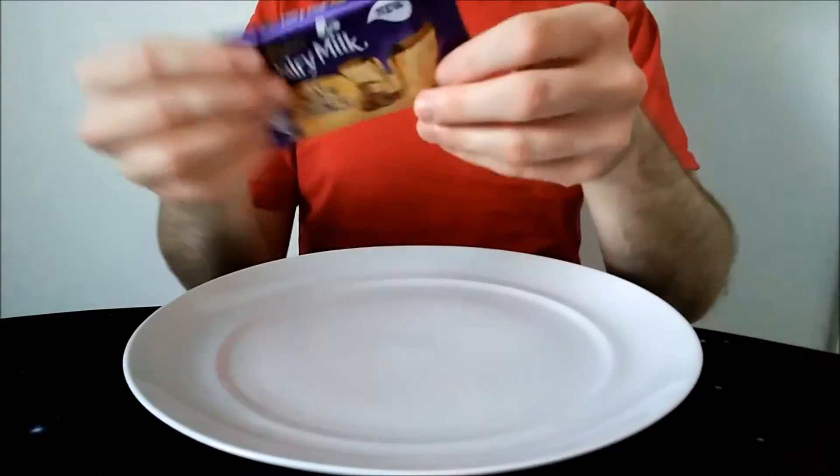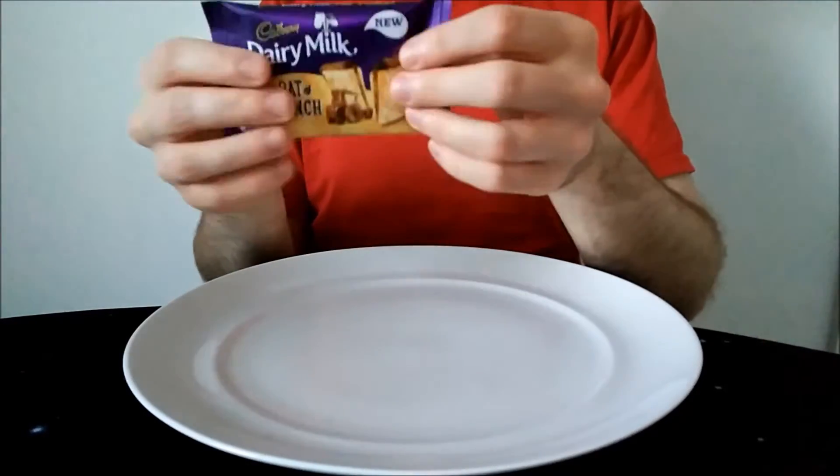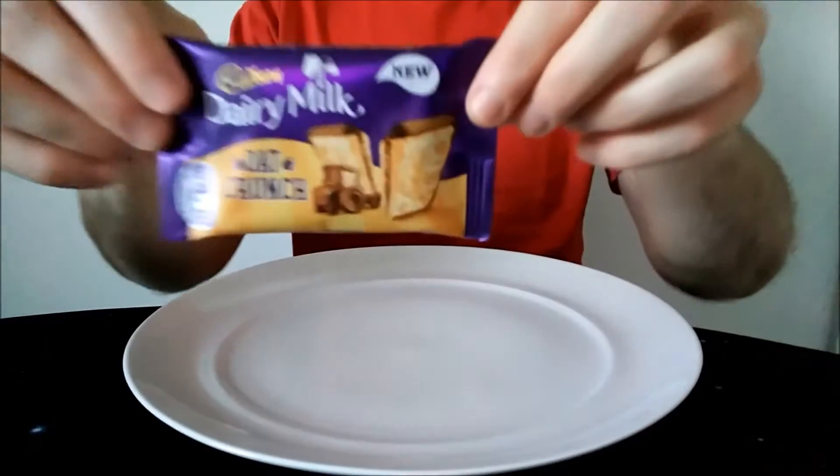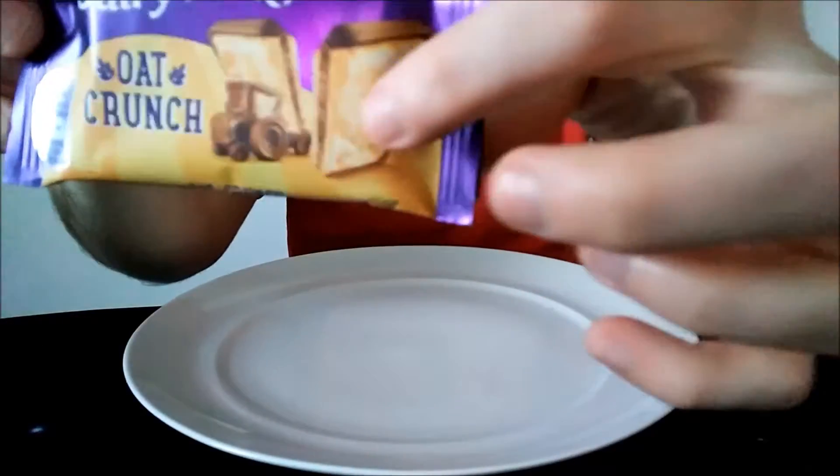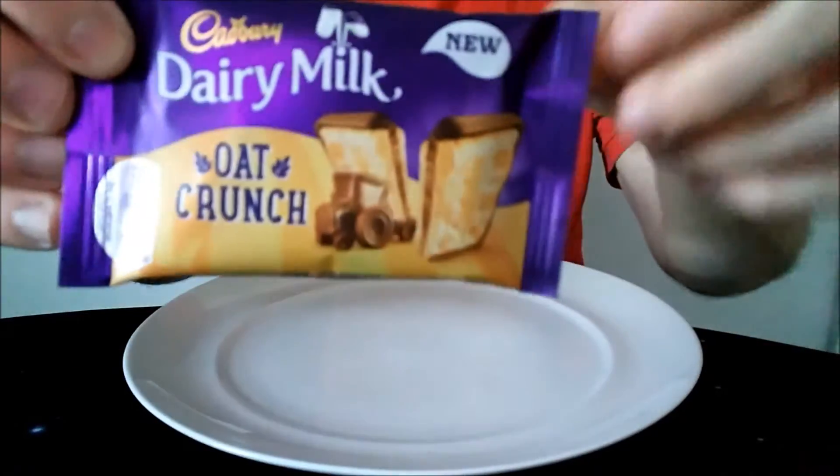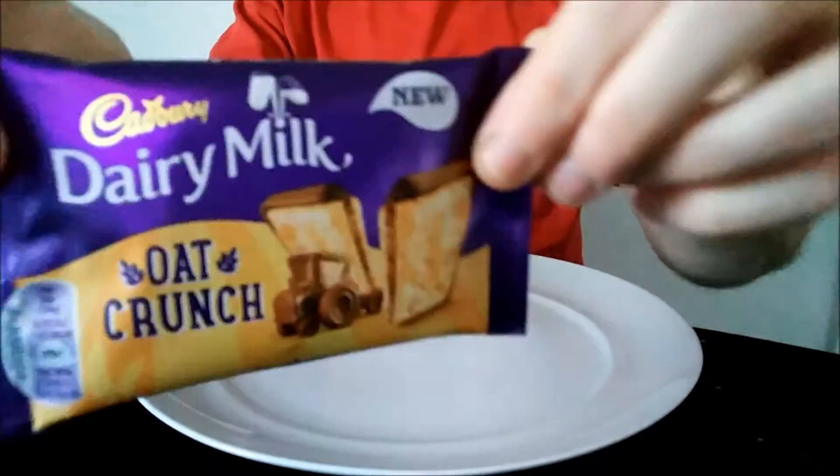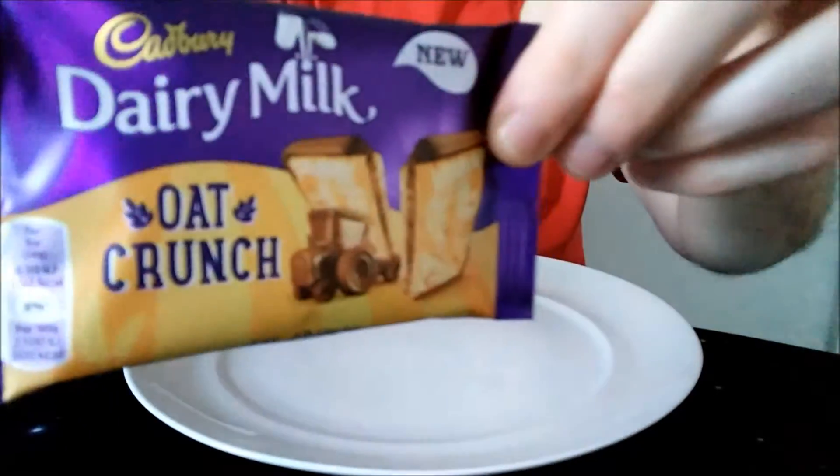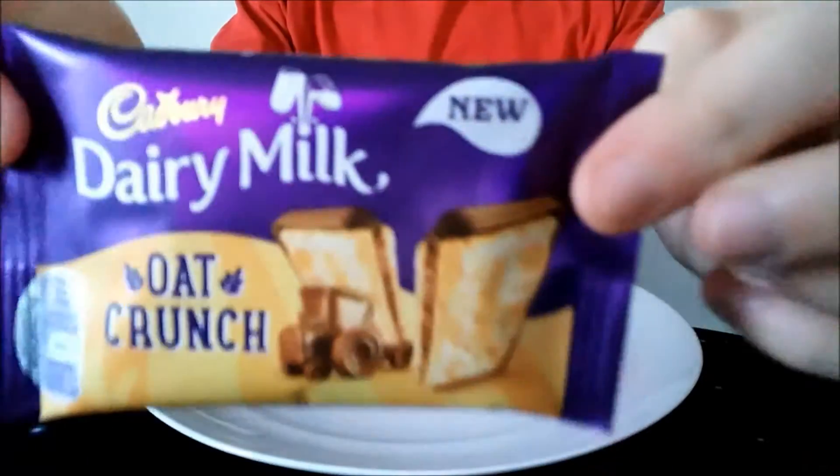Yeah, so it's a strange sized bar. It's basically four segments, four squares, which look roughly like that, of kind of chocolate-covered biscuits, oaty biscuits, as you can imagine, hence the name Oat Crunch. And it's dairy milk chocolate.